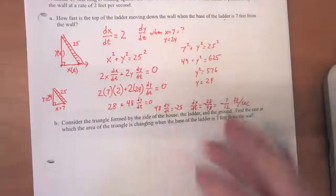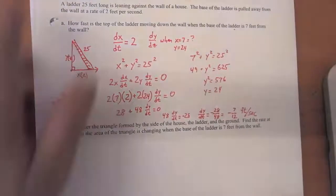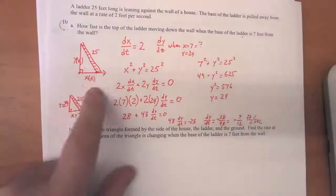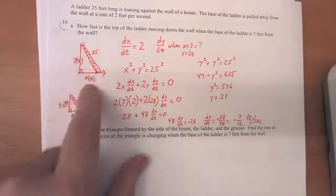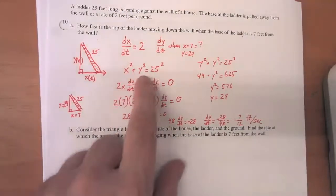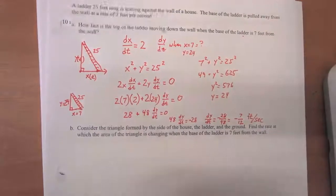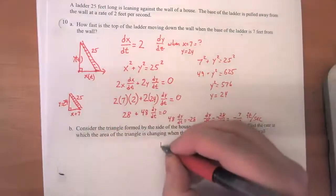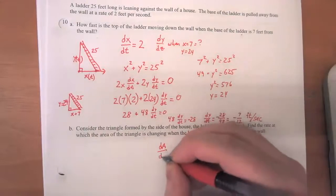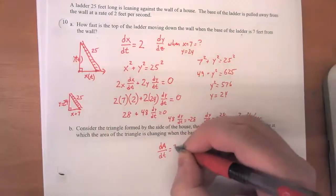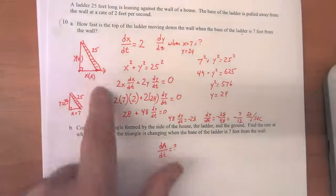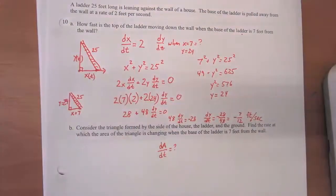So let's think about the area of the triangle. Now we've got the same basic idea that x and y are changing, but the relationship, we're not interested in the relationship between x and y being the Pythagorean theorem this time. We're interested in computing dA/dt. So what is the relationship between the area of the triangle and these two factors?